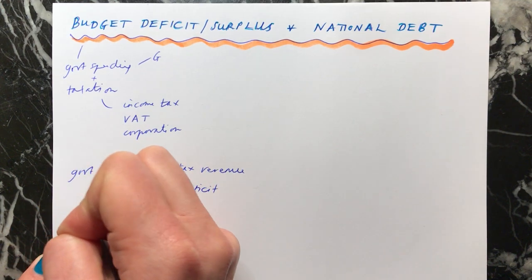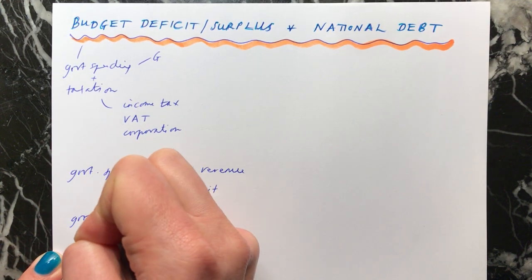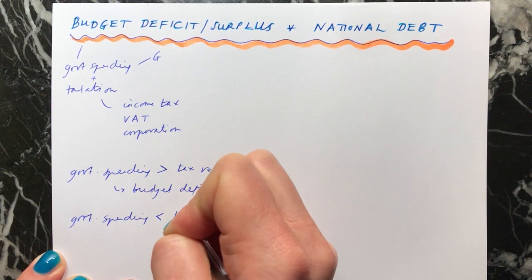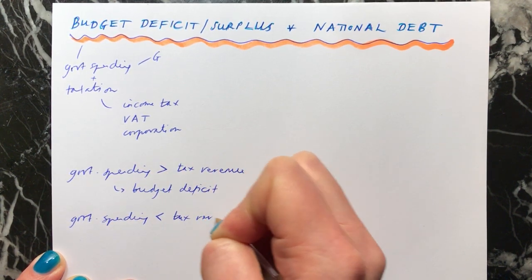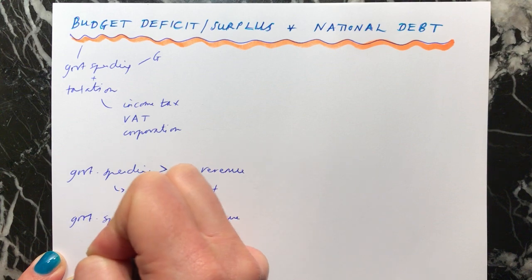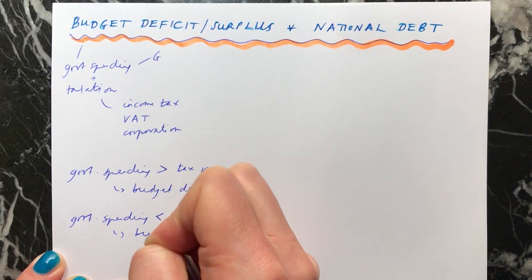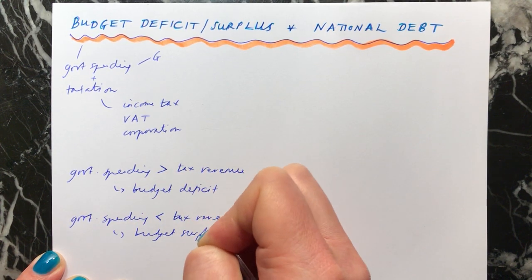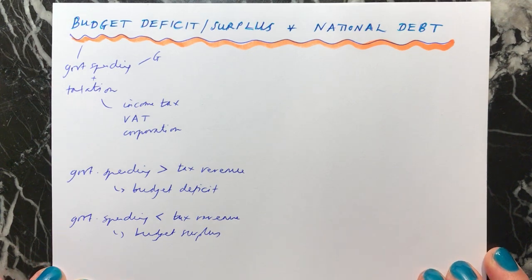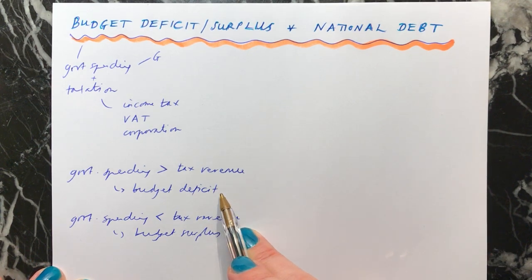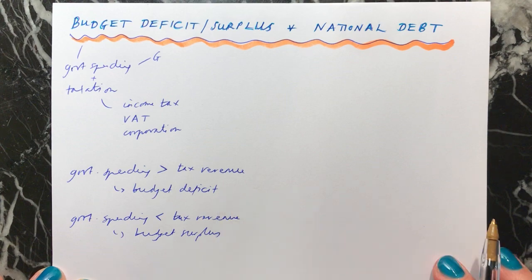On the other hand, if the government is spending less than they're collecting in tax revenue, we have a budget surplus. And for some time in the UK, we've had a budget deficit — the government is spending more money than they're receiving in tax revenue.